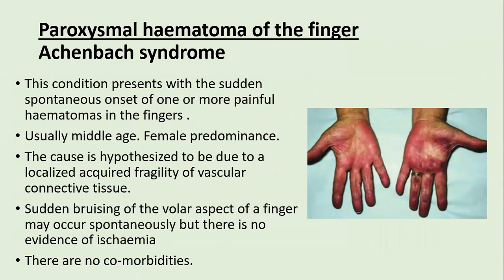Paroxysmal hematoma of the finger, or Achenbach syndrome, presents with sudden spontaneous onset of one or more painful hematomas in the fingers, usually in middle-aged females. The cause is hypothesized to be localized acquired fragility of vascular connective tissue. There is sudden bruising on the volar aspect of the fingers spontaneously, with no evidence of ischemia and no comorbidities.